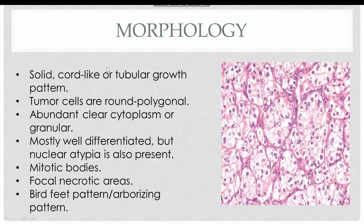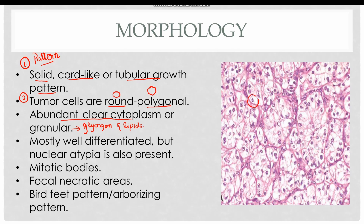Regarding histology, the tumor cells form solid, chord-like, or tubular growth patterns. The tumor cells are round or polygonal with abundant clear cytoplasm, or the cytoplasm may be granular due to the presence of glycogen and lipids. These cells are mostly well-differentiated, but nuclear atypia is present in certain cases. Mitotic bodies are always present in malignant tumors.